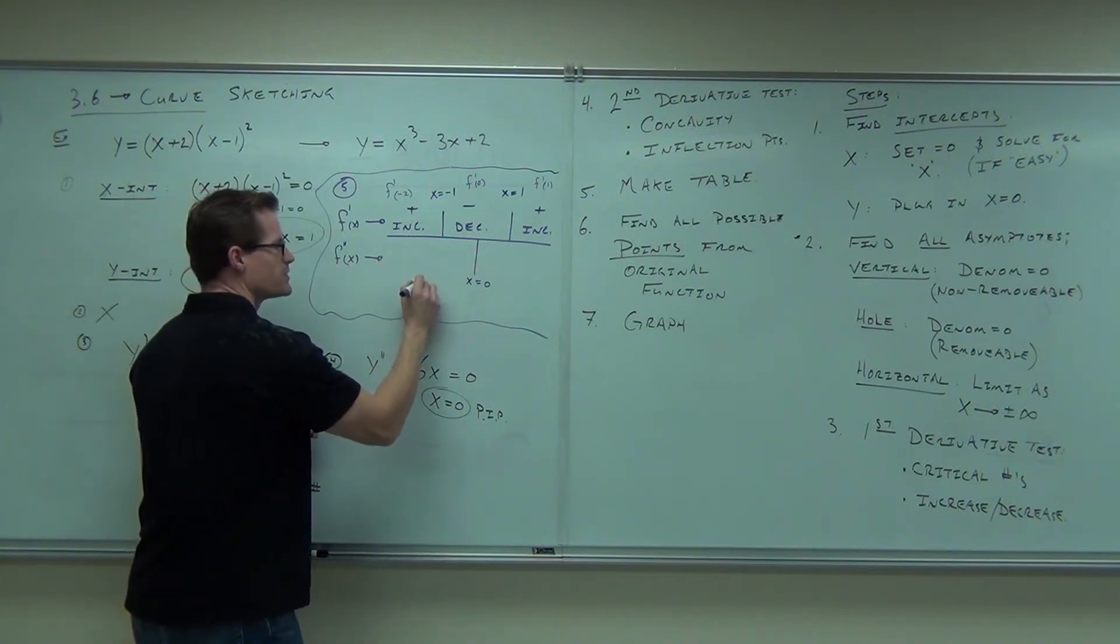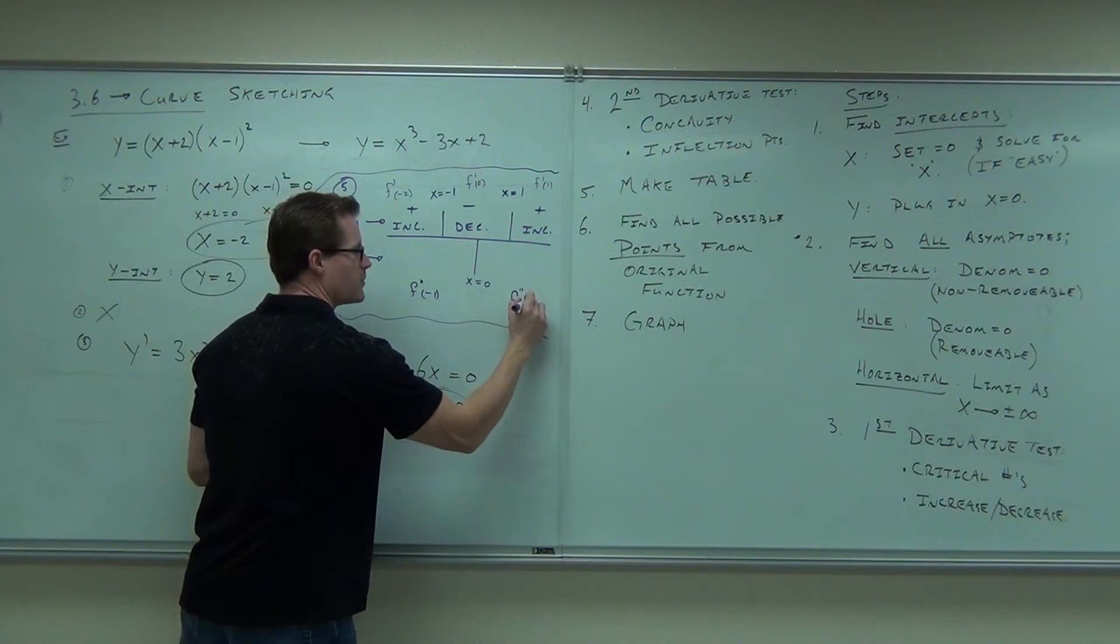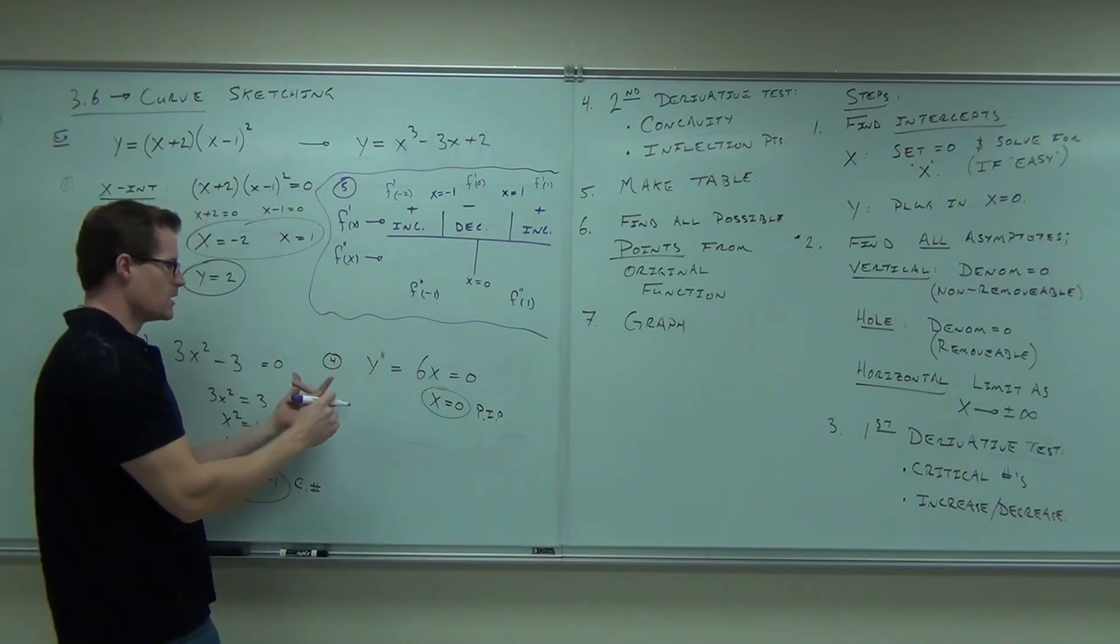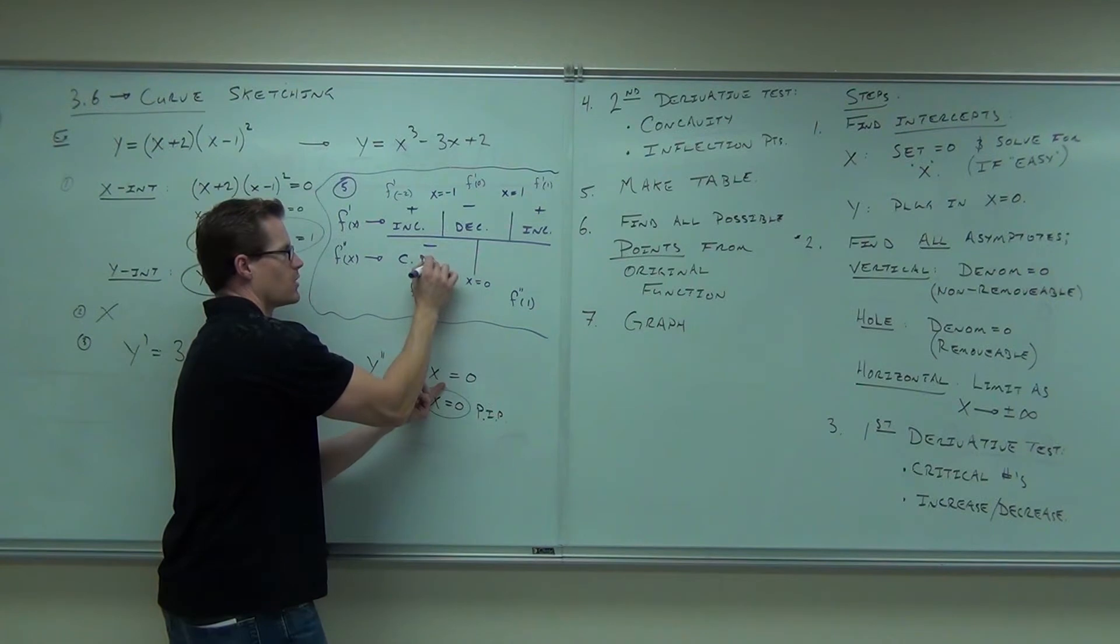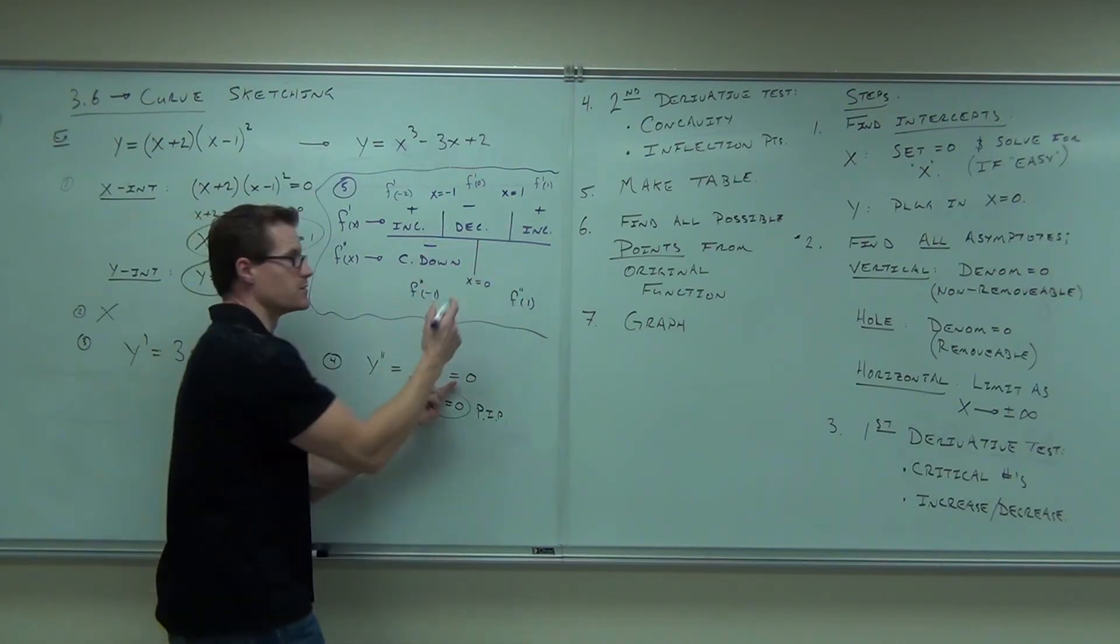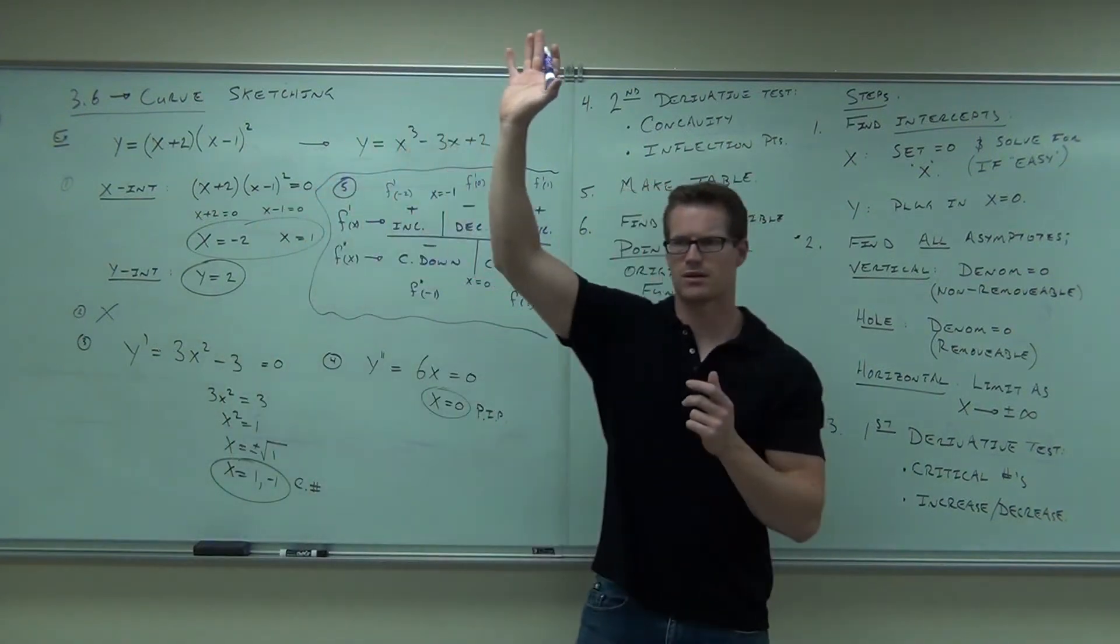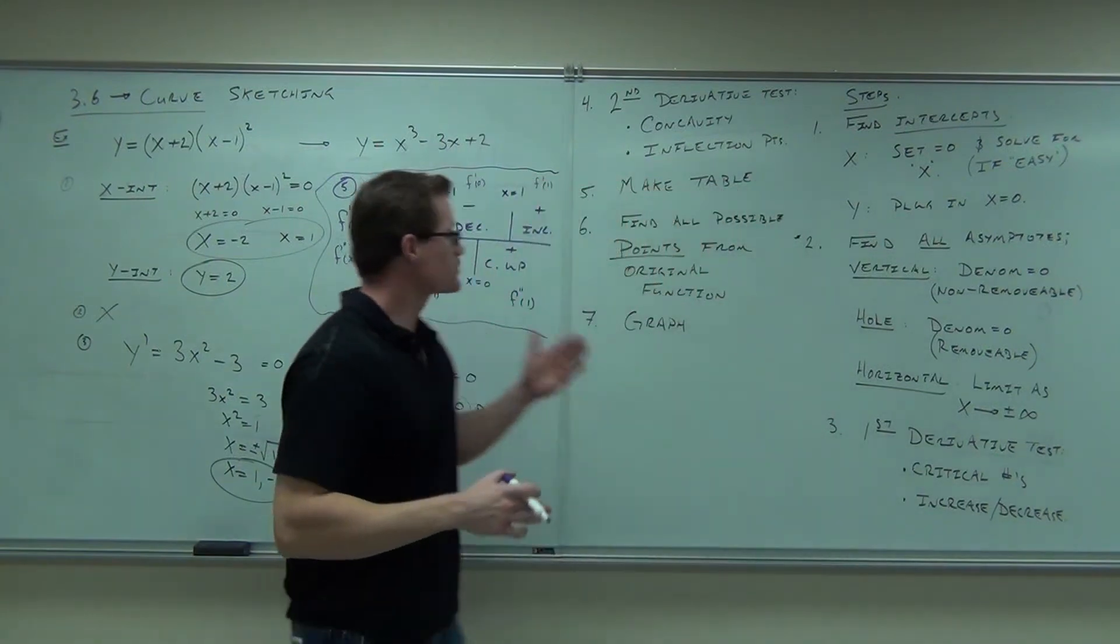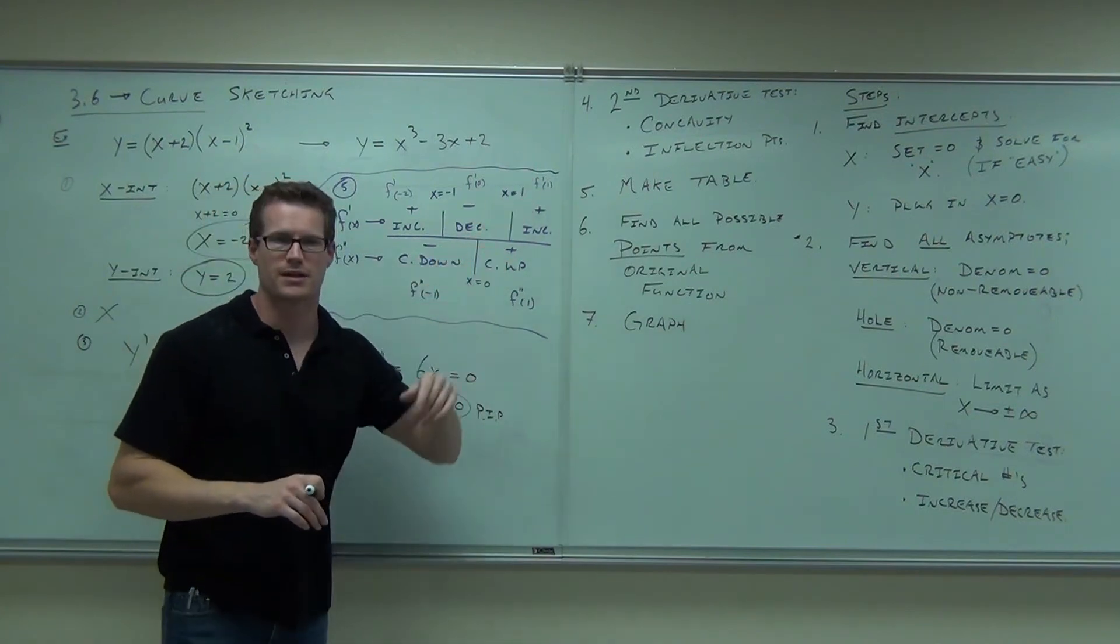Second derivative. I'd try f double prime of negative one. I'd try f double prime of positive one. Remember, it doesn't mean you can't plug those in for your second derivative. Negative one gives you negative, concave down. Positive one gives you six. That's positive, concave up. Some people feel okay with their concave down, concave up. That right there is a picture of our graph. We're done with step five. This basically tells you up, down, up. We just have to find some points, and we'll graph that next time.